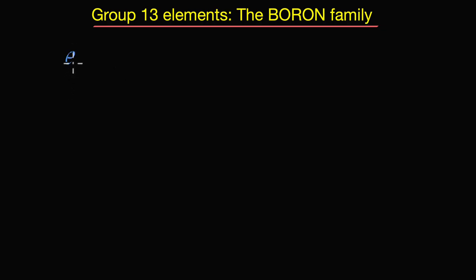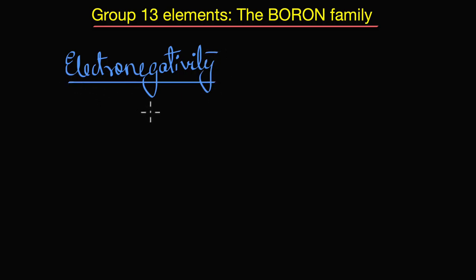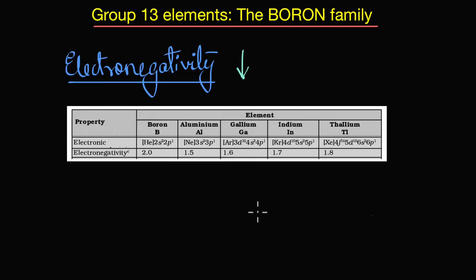Before wrapping up, let's discuss electronegativity. Electronegativity is the tendency of an atom to attract a shared pair of electrons towards itself. In general, electronegativity decreases down the group. However, in group 13, from aluminium onward, we actually find electronegativity values increasing, although nominally. This can again be attributed to the poor shielding effect of the d and f electrons.